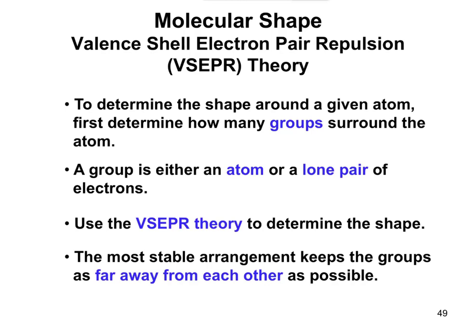We're going to look at shape around particular atoms within a molecule. To determine the molecular shape, first determine how many groups surround an atom. A group is either an atom or a lone pair of electrons.